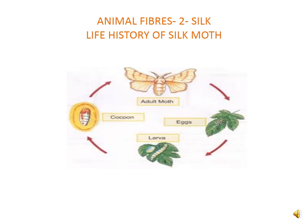Before we discuss the process of obtaining silk, it is necessary to know the interesting life history of silk moths. The female silk moth lays eggs from which hatched larvae, which are called caterpillars or silkworms. They grow, and then the caterpillar is ready to enter the next stage of its life history, called pupa.